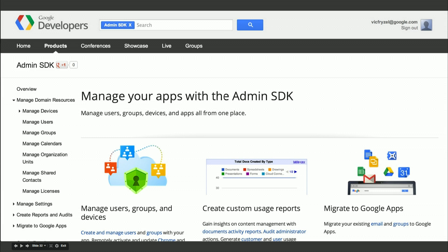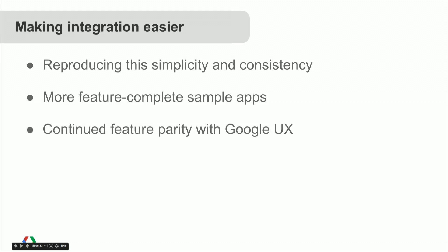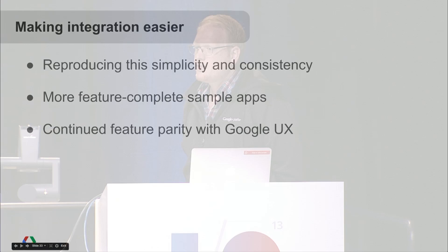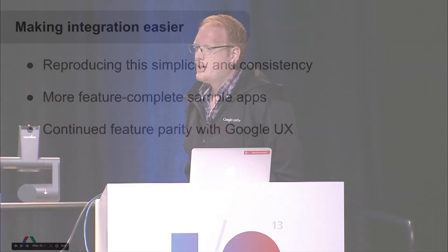We're working on reproducing the simplicity and consistency of the Directory and Reports APIs into other APIs in the Admin SDK, and providing more feature-complete sample applications in a broad range of languages. These two new APIs are on our new API infrastructure at Google — not the old GData infrastructure. Client libraries are consistently kept up to date in a more automated way, so the latest Java client library immediately has access to the latest API features. We're also continuing to focus on feature parity with Google UX by developing Google applications using our APIs first.